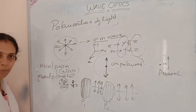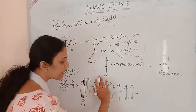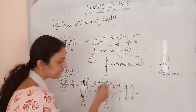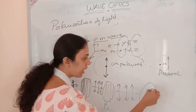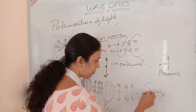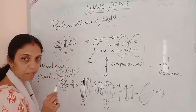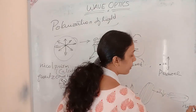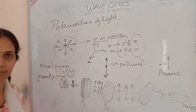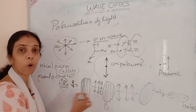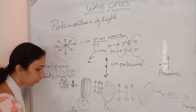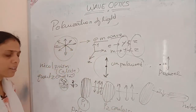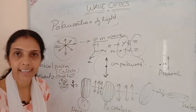If I keep P2 parallel to P1, the intensity remains the same after both polarizers. If I rotate P2, the intensity reduces because the components are no longer fully aligned. If P2 is exactly perpendicular to P1, no light passes through — it is fully blocked. The first polarizer is called the polarizer, and the second one is called the analyzer.